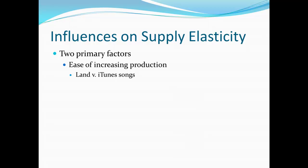Land is very difficult to increase production. As a result, the supply of land will be very inelastic. That is, as the price changes quite a bit, we tend not to see very large quantity changes. Whereas with iTunes songs, if we get a relatively small change in price, we see a huge change in the quantity that is supplied.